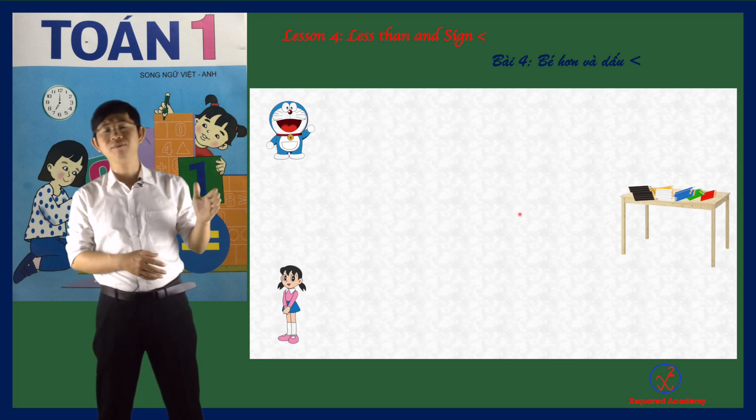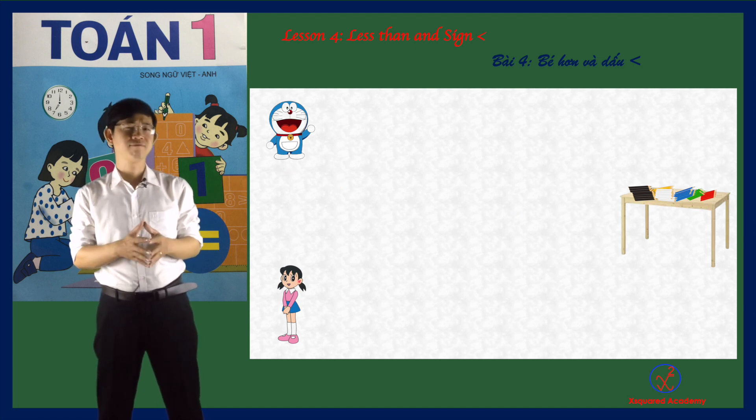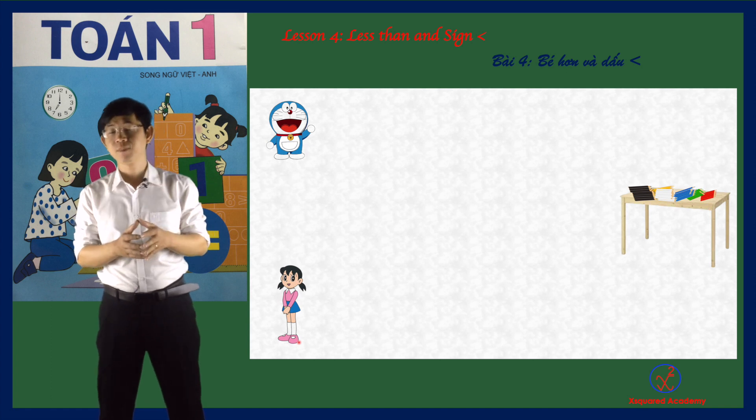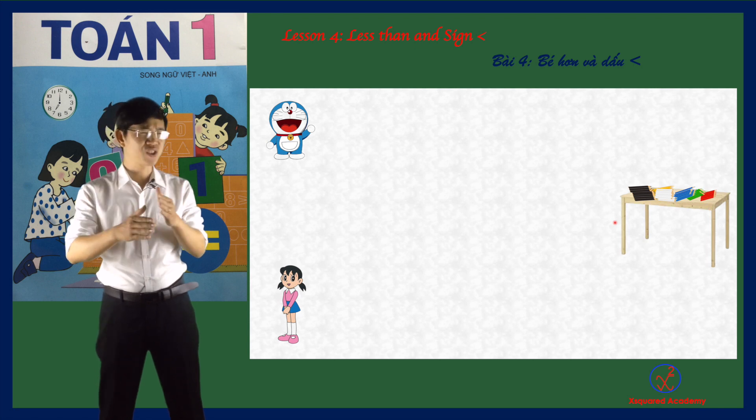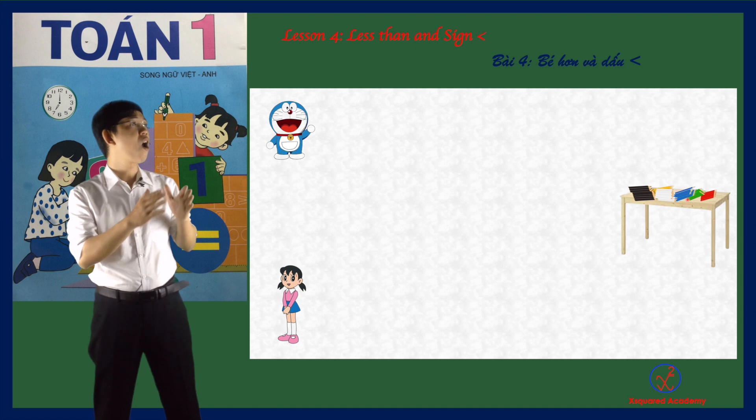And this time, Doraemon plays with Suka. We play with the same rule. Run into the table and take some color pencils. Ready? Run.